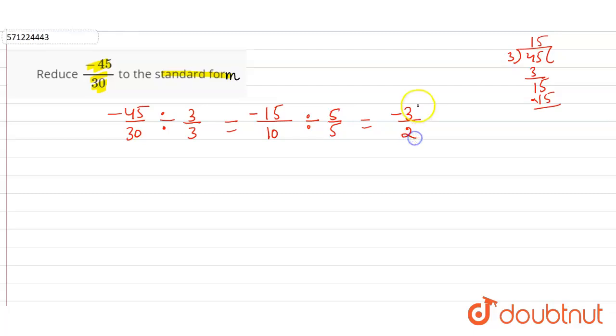So this is the standard form, -3/2 is the standard form of -45/30, and this is the required answer for the given question. For class 6 to 12, IIT-JEE and NEET level.